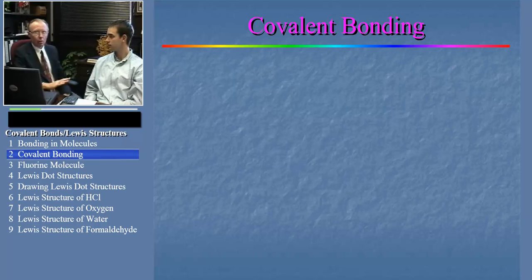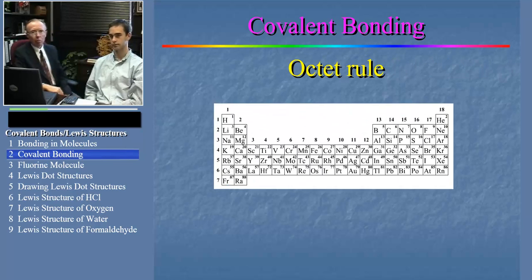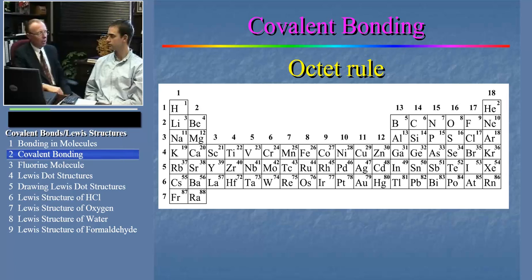Now, in covalent bonding, as for ionic bonding, we talk about the atoms wanting to obey the octet rule. That is, the atom wants to obtain the configuration of the closest noble gas.